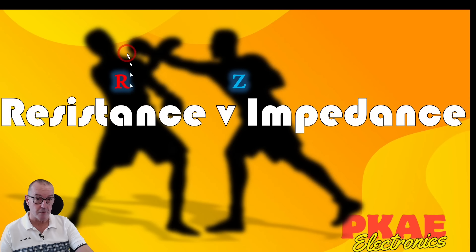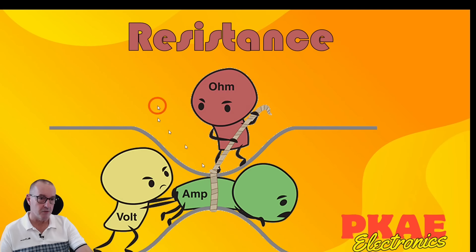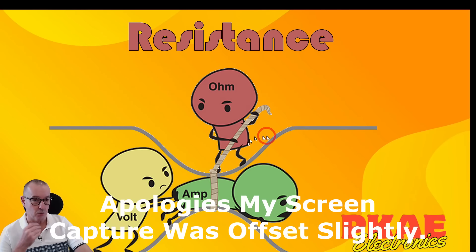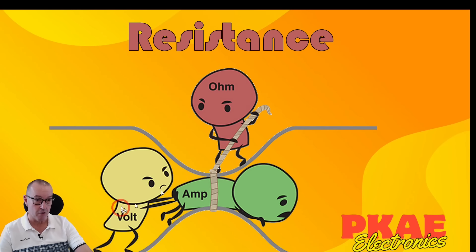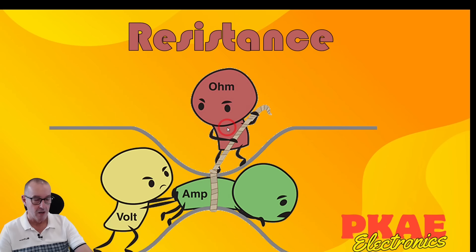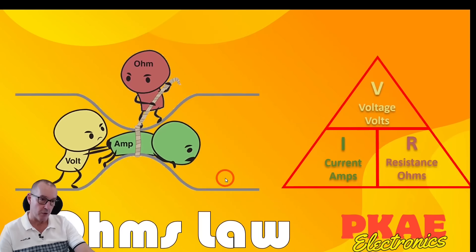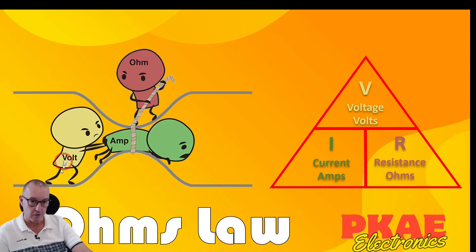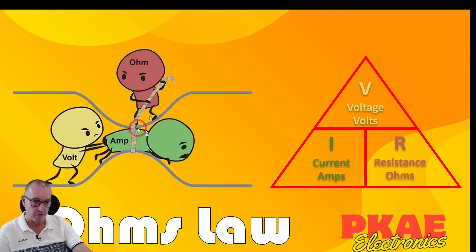We're going to be talking about these two: resistance, represented by the symbol R, and impedance, represented by the symbol Z. Many of you are probably familiar with this illustration of electrical current flow. It's a brilliant illustration — I like it and I use it a lot, but as with all analogies, it breaks down at certain points. It's not truly representative, but for most instances it's great for getting your head around what happens in an electrical circuit. It's showing us Ohm's law: voltage is trying to push the current through the conductor, but resistance — measured in ohms — is impeding that flow, creating a resistive path.